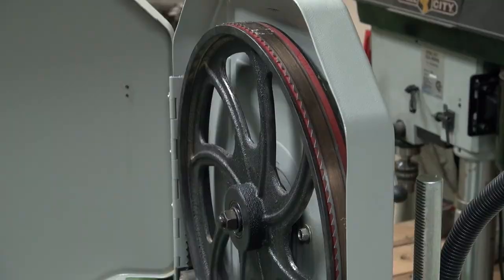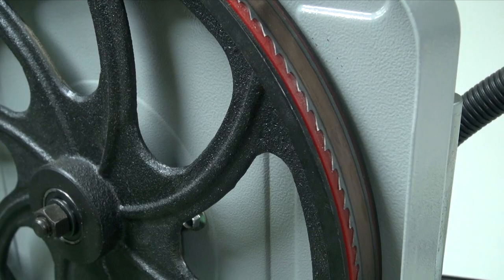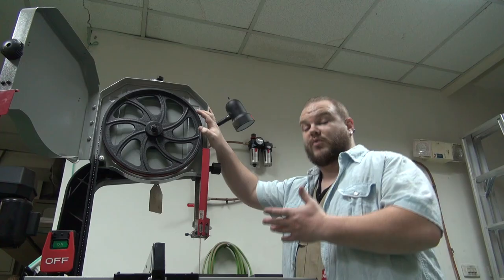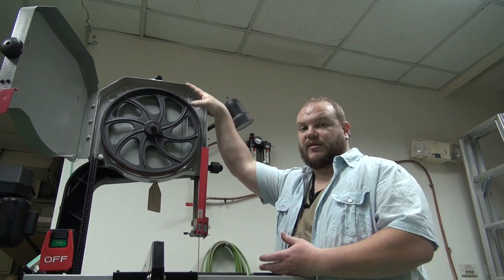Because the wheel's crowned, we need to pay attention to where the blade sits. It should sit roughly in the center, but the most important thing is, especially with a wide blade like this one, you need to make sure that your teeth are inside the tire.